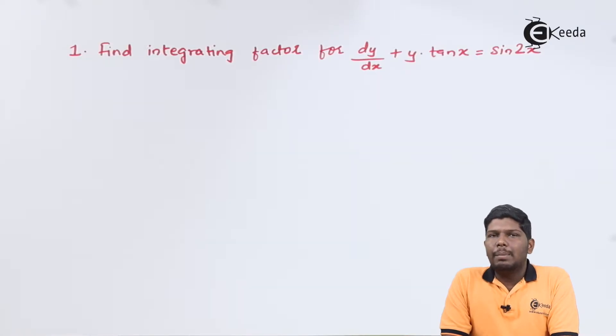Now, how to identify linear equations? The word linear itself says that the power of dy/dx as well as the value of y should be one.